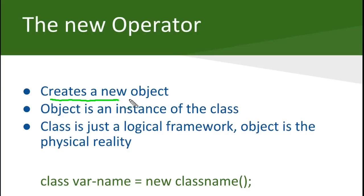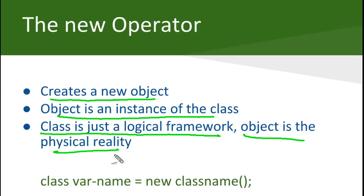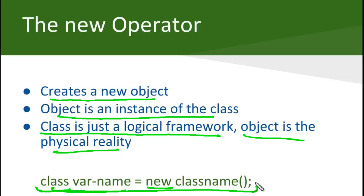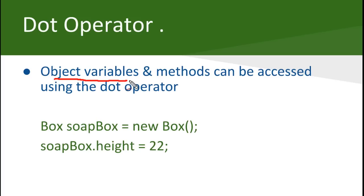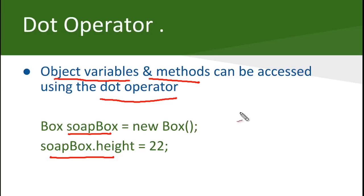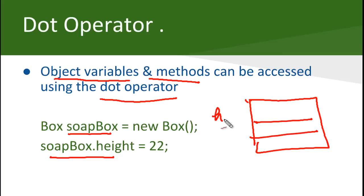What the new operator is doing is basically creating a new object, and we know that an object is an instance of the class. But remember, a class is just the logical framework; object is the actual physical reality. This is the syntax of creating a new object: we use the new keyword, write the variable name, and the class name. So we have the class name, variable name, the new keyword, and again the class name using open-close parenthesis, and this will create the object. Now we want to access the object's variables and methods. We do that using the dot operator. When we do soapbox.height = 22, the instance variable height of soapbox will get the value 22. That is done using the dot operator.